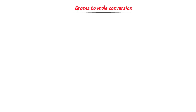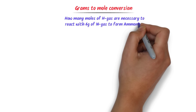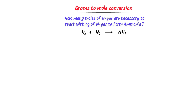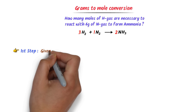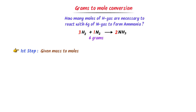Consider this problem: how many moles of hydrogen are necessary to react with 6 grams of nitrogen to produce NH₃? I write the balanced chemical reaction: H₂ + N₂ → NH₃ with coefficients 3, 1, and 2. To solve, I follow two steps. In the first step, I convert the given mass to moles of the known species. 6 grams of nitrogen gas is given; the molar mass of nitrogen gas is 28 grams.